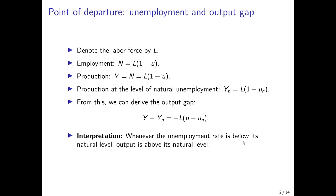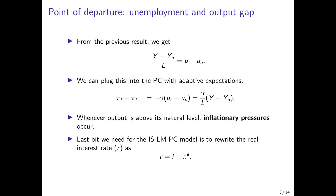We see that whenever the unemployment rate is below its natural level, output is above its natural level and vice versa. From this result, we can derive an expression for the deviation of the current unemployment rate from the natural unemployment rate in terms of the deviation between actual and natural output. Plugging this into the Phillips curve, we get an expression for the change in inflation over time as depending on the output gap. If the output gap is positive — current output is above its natural level — there are inflationary pressures, and inflation would tend to be above its previous level.